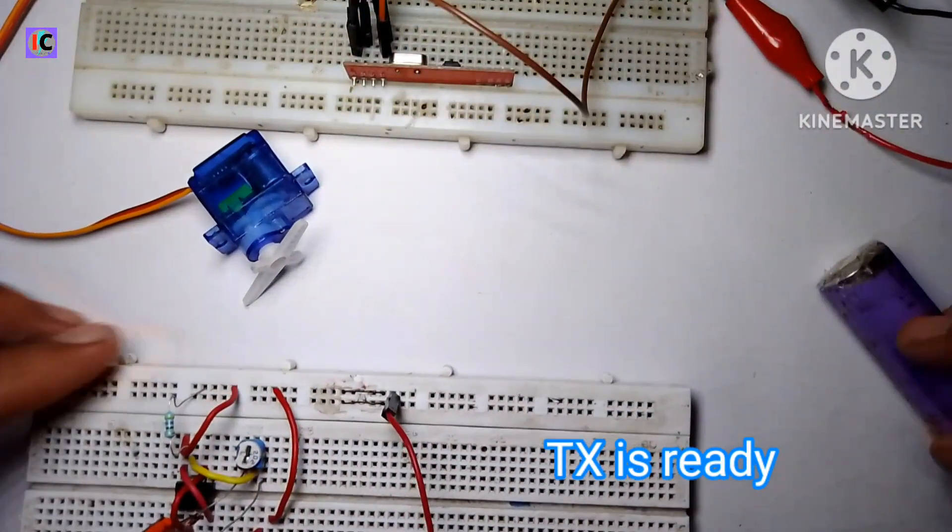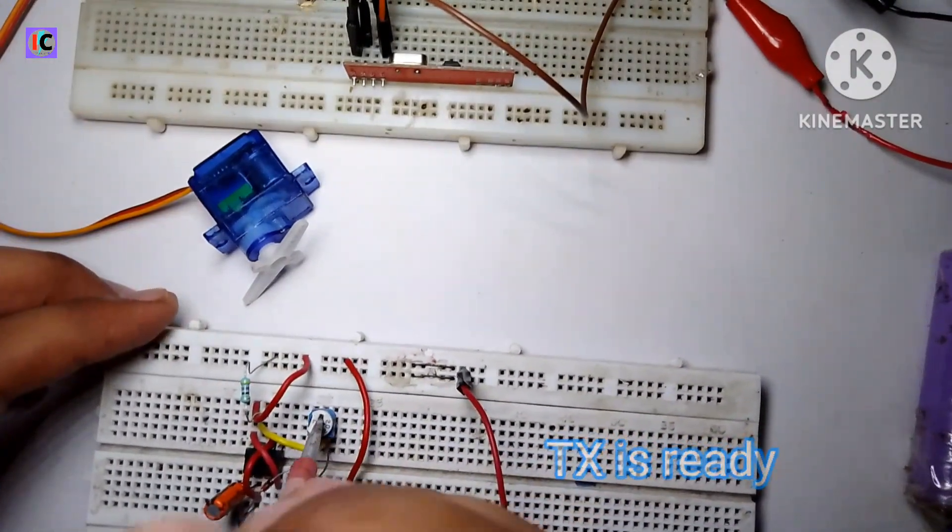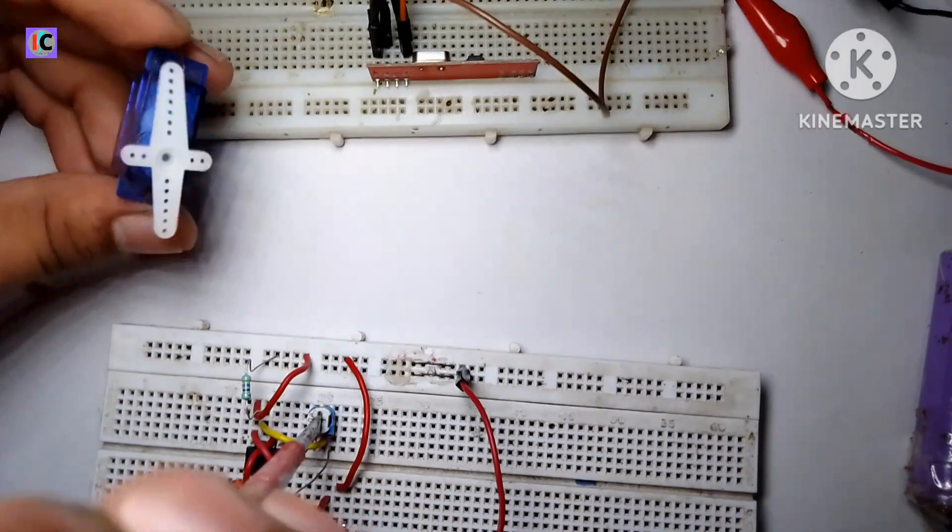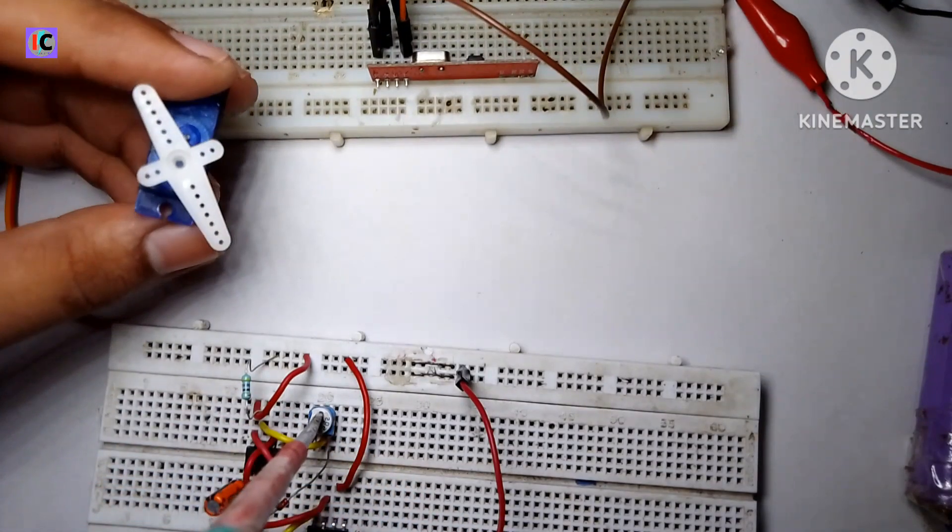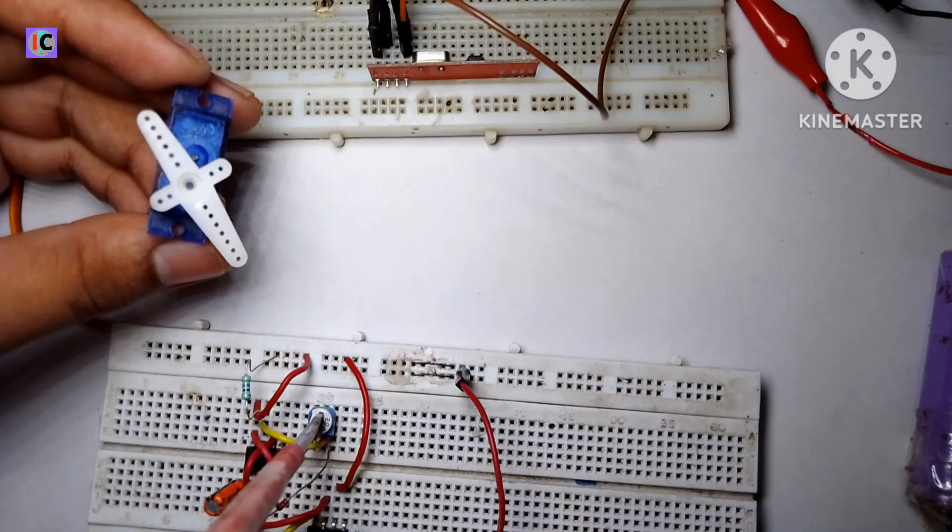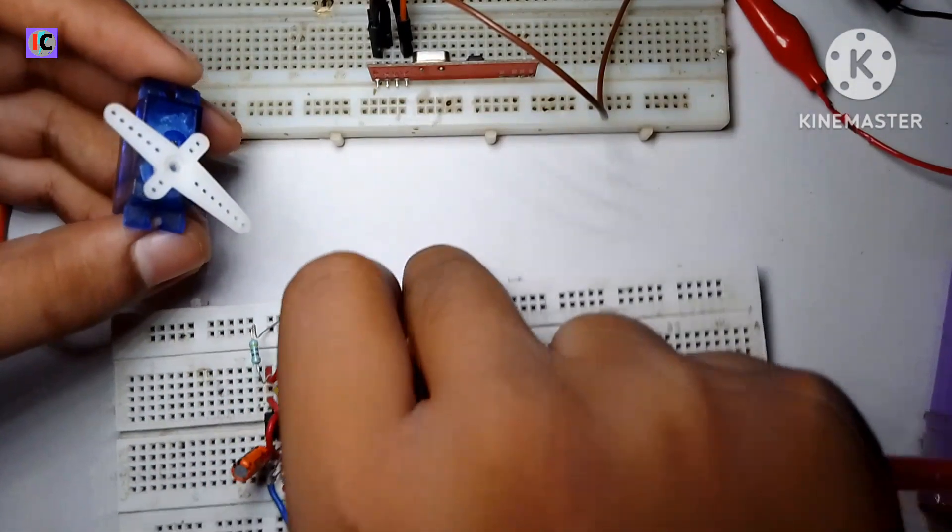Now if I rotate the 2k potentiometer, according to this potentiometer the servo motor also rotates. It's very accurate.